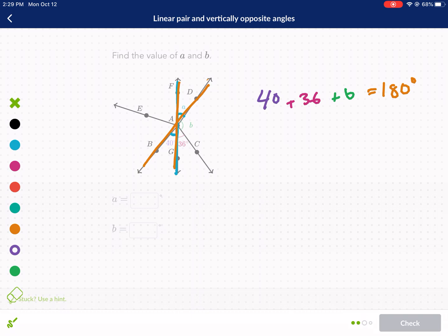Okay, so now we have 40 plus 36. That is 76. So we're going to be minus 76 for both sides. That gives us B is equal to, what is that, 104? Okay, so we know B is equal to 104.